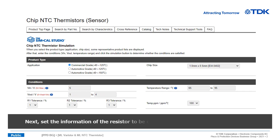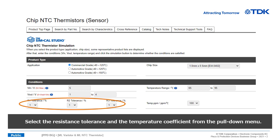Next, set the information of the resistor to be combined with the NTC thermistor. Select the resistance tolerance and the temperature coefficient from the pull-down menu.